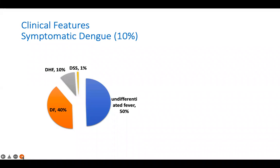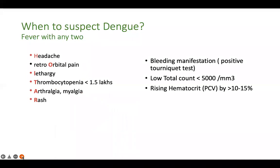Only 10% of dengue infections are symptomatic, and even when symptomatic, most behave like a viral fever without complications. Only 10% of those progress to dengue hemorrhagic fever or dengue shock syndrome. Dengue should be suspected when a patient has fever with any two of: headache, orbital pain, lethargy, thrombocytopenia, arthralgia or myalgia, and rash.